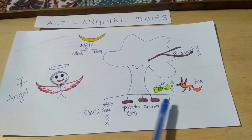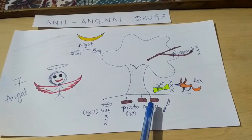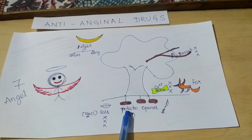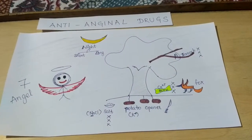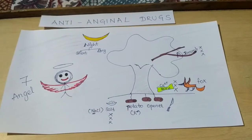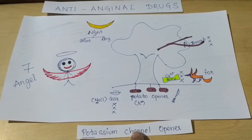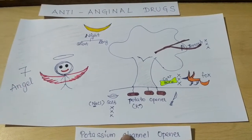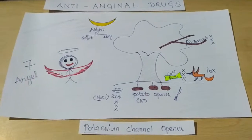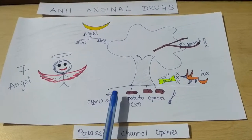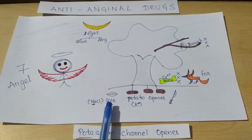Then we see potatoes are growing under this tree, and there is a knife. The knife represents that we are going to open these potatoes — potato opener. Potato represents potassium, which is K+, and we are going to cut the potatoes open. So this represents the class of drug which is the potassium channel opener.